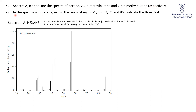So start off in the spectrum of hexane, which is spectrum A. Assign the peaks at 29, 43, 57, 71, and 86. So let's see where they are. There's 29, there's 43, there's 57, 71, and 86.